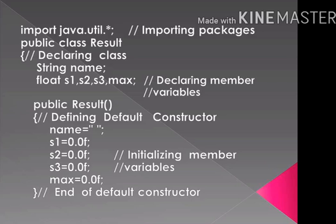Public Result() — defining default constructor. name equals to empty string; s1 equals to 0.0f; s2 equals to 0.0f; s3 equals to 0.0f; max equals to 0.0f — initializing member variables. Close the curly braces, end of default constructor. The default constructor initializes all the member variables with the default values.